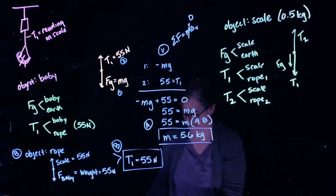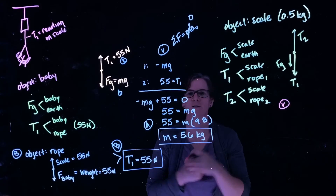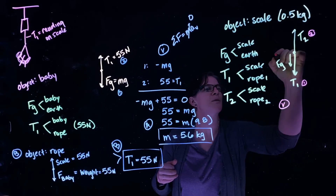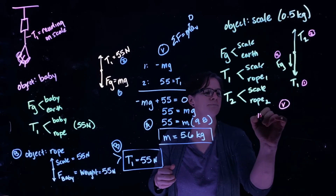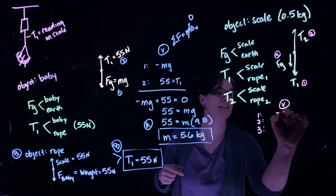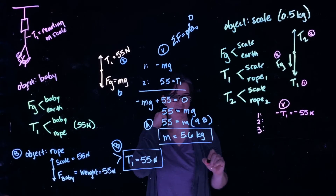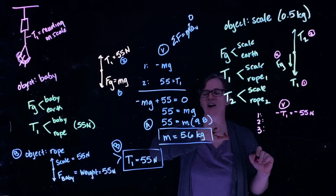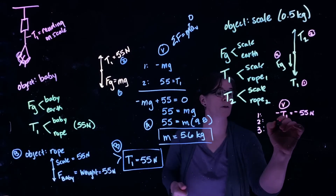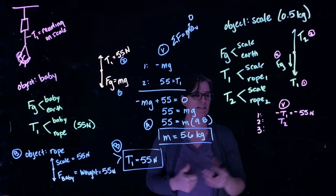We only have vertical forces, so we're only going to look at the vertical components—nothing is happening horizontally. Force number one is T1, in the negative direction, and we know that is 55 newtons. Force number two is the upward force T2—we don't know what it is yet, but it is positive. That's what we're interested in in this problem.